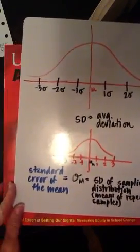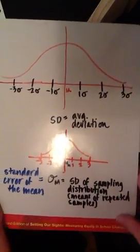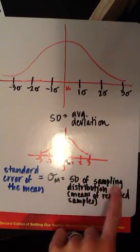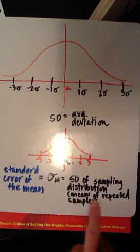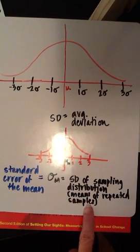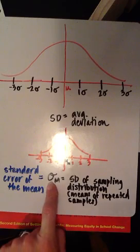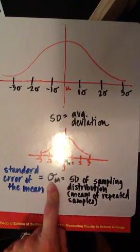If you recall from part one, the standard error of the mean is equal to the standard deviation of the sampling distribution, and the sampling distribution was comprised of the means of all of our repeated samples. This symbol here represents the standard deviation of the sampling distribution or the standard error of the mean.